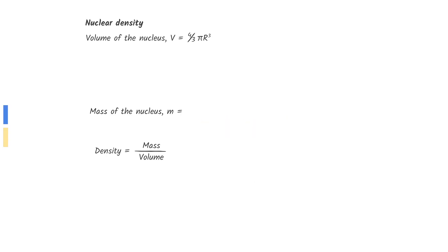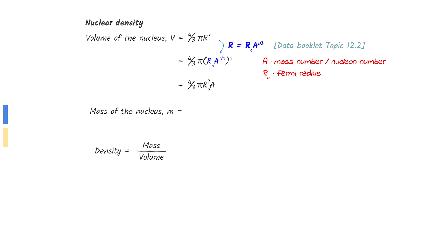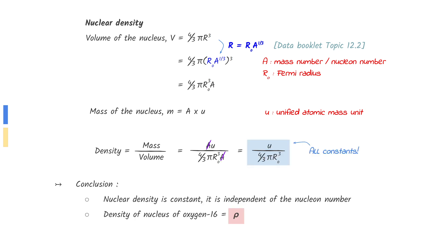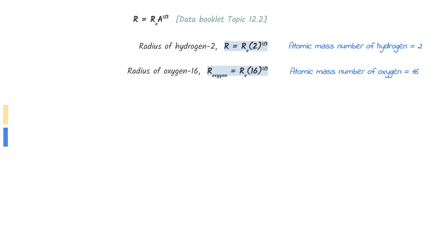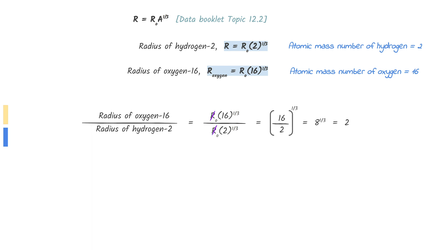Let's start by finding the nuclear density. The volume of the nucleus can be found using the equation for a sphere. Substituting in the equation for nuclear radius and simplifying, and multiplying the nucleon number by the unified atomic mass unit gives the mass of the nucleus. Putting these into the density equation shows that nuclear density is constant and does not depend on the nucleon number — so the nuclear density of oxygen is the same as hydrogen. To find the radius, use the equation from the data booklet for both hydrogen and oxygen. Dividing the radius of oxygen by the radius of hydrogen cancels the Fermi radius constant. The cube root of 8 is 2, and given that the radius of hydrogen is R, rearranging gives the radius of oxygen.